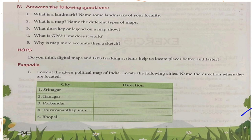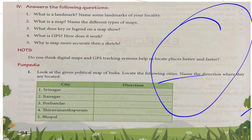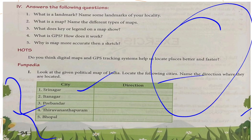Funpedia activity: Look at the given political map and locate the following cities — Srinagar, Itanagar, Porbandar, Thiruvananthapuram, and Bhopal — and find in which direction each city is placed on the map. This is your work to explore and find out yourself. Thank you so much for watching. Bye everyone.